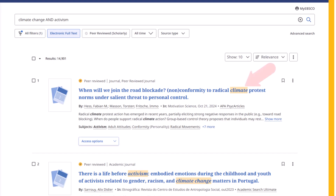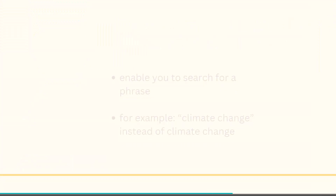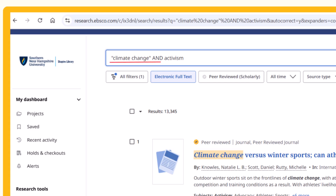I might notice that some results showed sources that mention the word 'climate' or the word 'change' but not the phrase 'climate change.' In boolean searching, putting a phrase in quotation marks indicates to the search engine that you are searching for results that include the entirety of the phrase. I can put 'climate change' in quotations to tell the search engine that I am looking for sources that include that specific phrase, not the individual words 'climate' or 'change.' I now have "climate change" in quotations and activism.